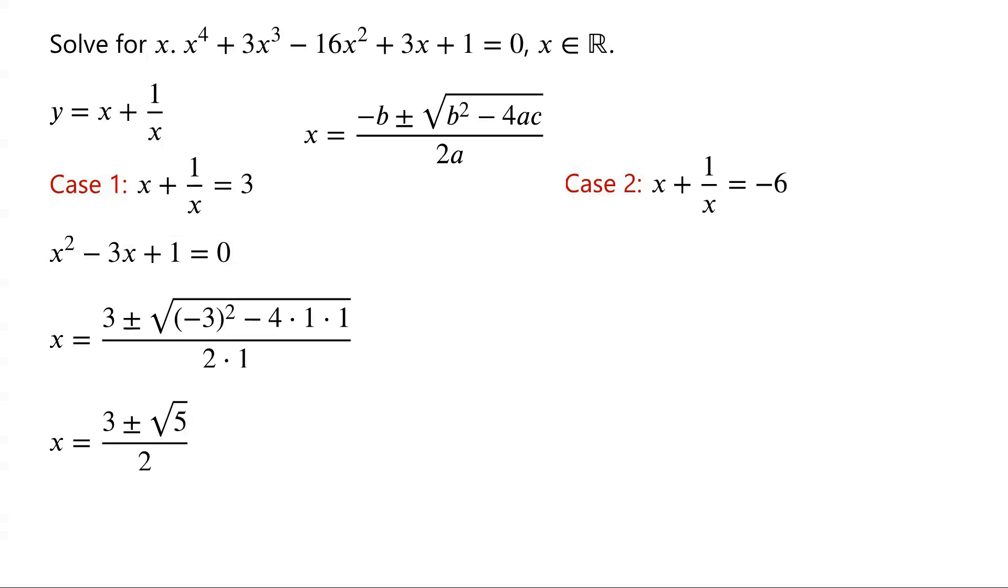For case 2, multiply the equation by x, and rearrange the equation, we have x² + 6x + 1 = 0. Again, this is a quadratic equation. The coefficients are a = 1, b = 6, and c = 1. So, we can now write x = (-6 ± √(6² - 4·1·1))/(2·1). 6² - 4·1·1 is equal to 32. Root 32 is 4√2. So, x = (-6 ± 4√2)/2, which is equal to -3 ± 2√2.